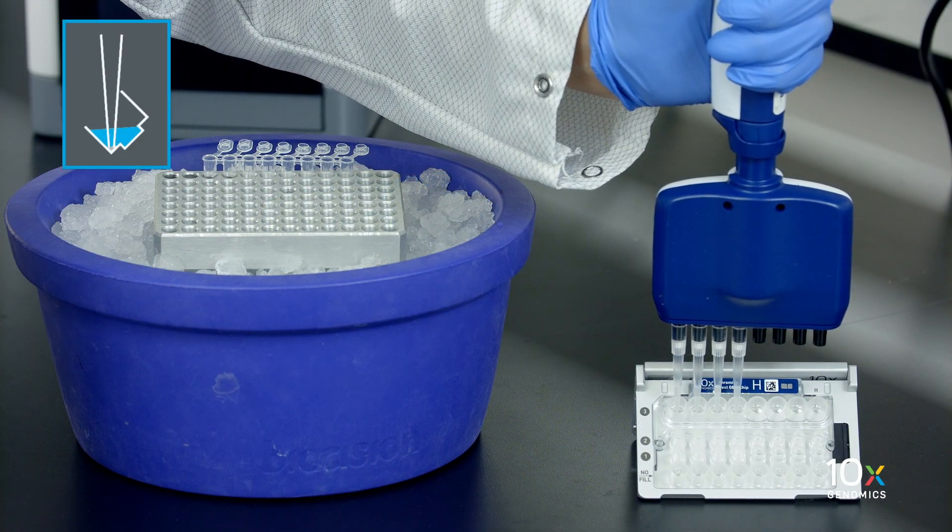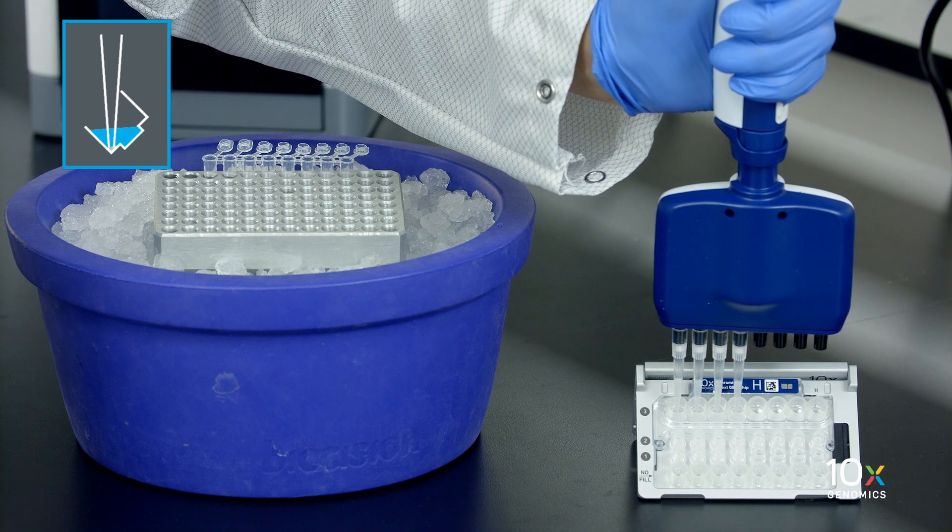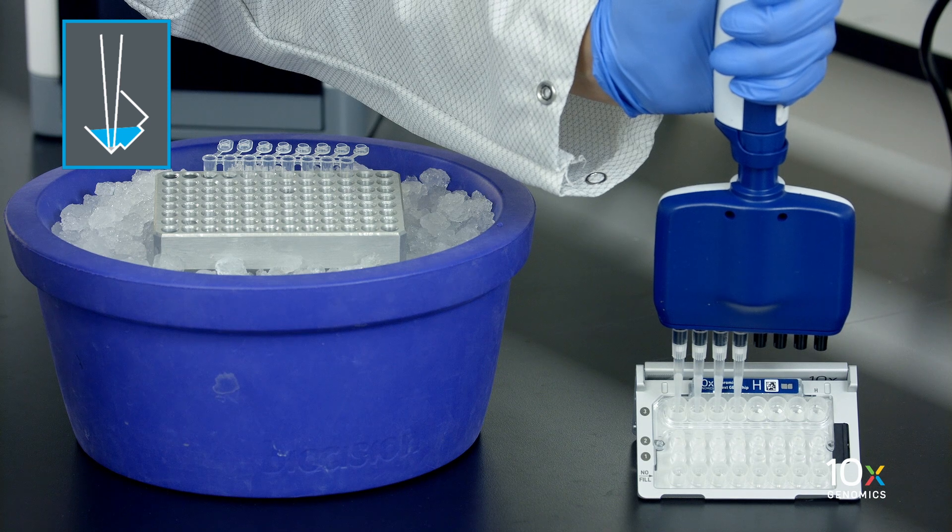Slowly aspirate 100 microliters of gems from the lowest points of the recovery wells in the top row labeled 3, without creating a seal between the pipette tips and the bottom of the wells.